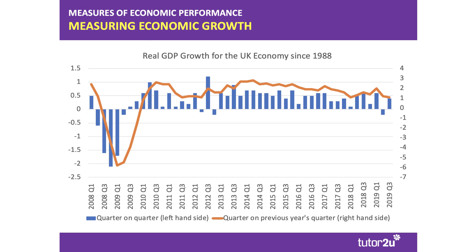Here's a chart showing the latest economic growth for the UK. We can either measure it in terms of the quarter-on-quarter change — that's shown in the blue histogram on the left-hand side — or we can measure it in terms of the annual rate of growth: a quarter on the previous year's quarter, the annualized increase in GDP, shown by the orange line on the right-hand side.